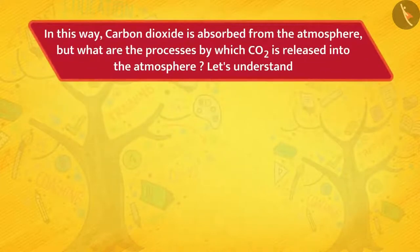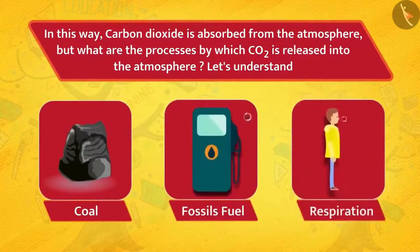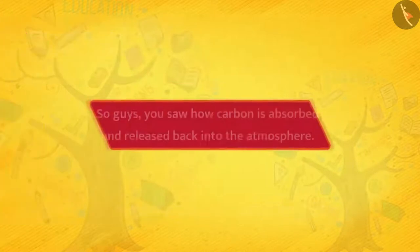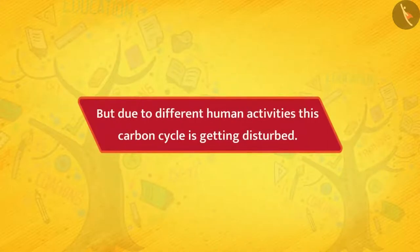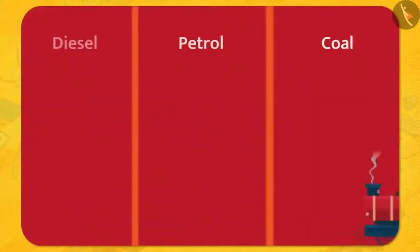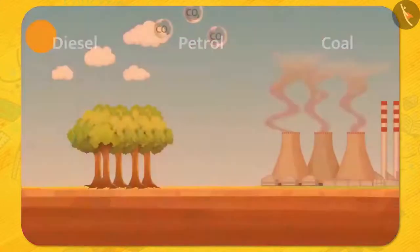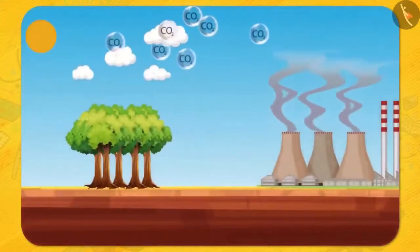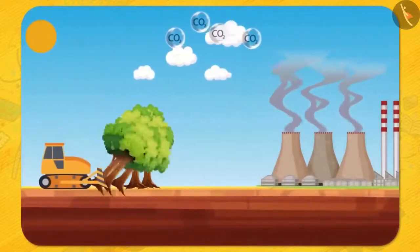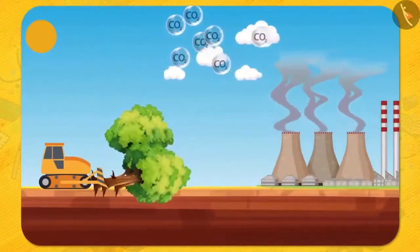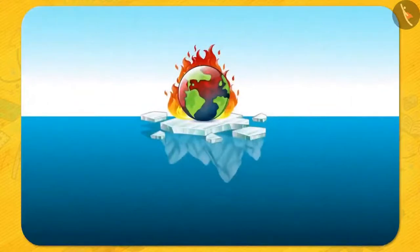But what are the processes by which carbon dioxide is released into the atmosphere? Carbon dioxide is released into the atmosphere by respiration and burning of fossil fuels and coal. But due to different human activities, this carbon cycle is getting disturbed. Human activities like burning of fossil fuels release a lot of carbon dioxide into the atmosphere. And the main job of absorbing this carbon dioxide is done by trees, but humans are cutting down the trees as well, which leads to an increase of carbon dioxide in the atmosphere, causing global warming.